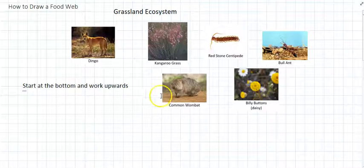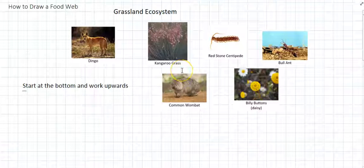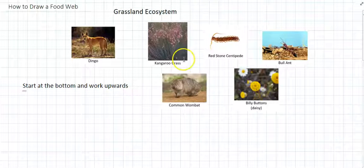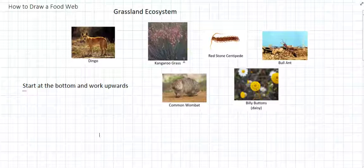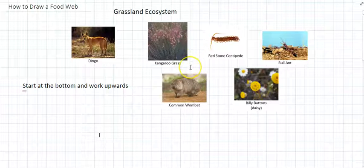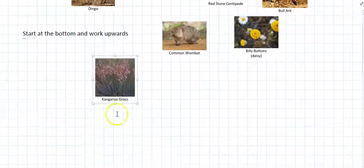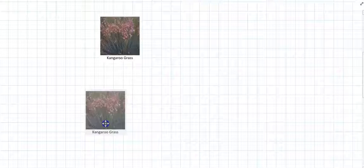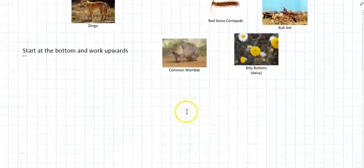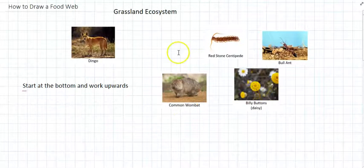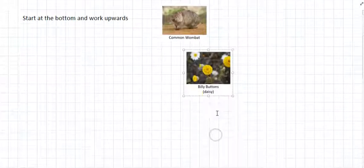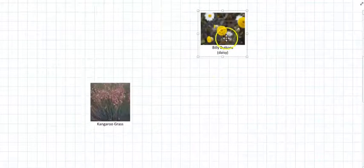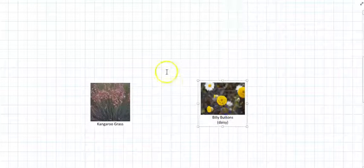Okay, so to start at the bottom we need to figure out what are the producers in our ecosystem. Well, remember that producers are plants and algae because they make their own food. They use photosynthesis and they don't need to eat anything else. So let's take our kangaroo grass because that's a producer and we'll put it at the bottom of our food web. Well, there's another plant here too because we've got a daisy plant. So let's put the billy buttons down the bottom as well. So we've got our producers now.